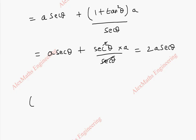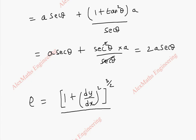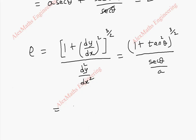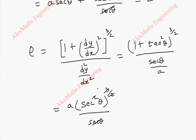Now coming to the radius of curvature: it is (1 + (dy/dx)²)^(3/2) divided by d²y/dx². This is (1 + tan²θ)^(3/2) divided by secant θ by a. The numerator becomes secant²θ by applying the identity 1 + tan²θ = sec²θ, and with the whole power 3/2 we get secant³θ. After cancelling secant θ, and bringing a up, the radius of curvature ρ is a·secant²θ.